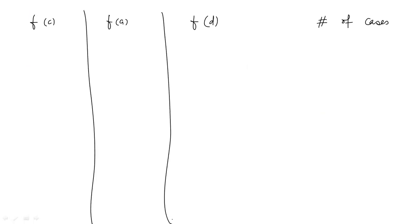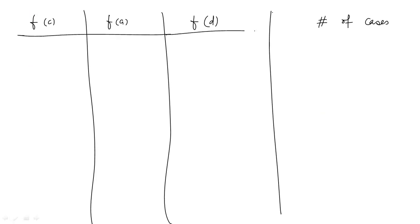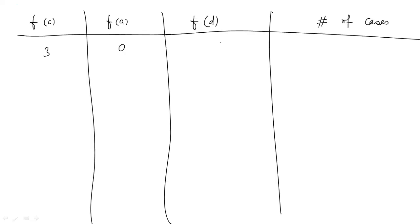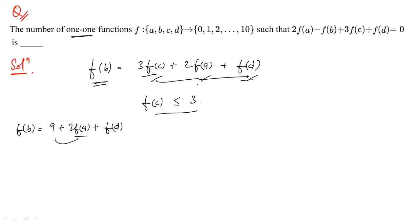Case f(c) = 3: The equation becomes f(b) = 9 + 2f(a) + f(d). Since f(a) ≥ 1 would make f(b) ≥ 11, we must have f(a) = 0. Then f(d) can only be 1 (since 0 is taken and f(d) = 1 gives f(b) = 10, the maximum). This gives just one case.